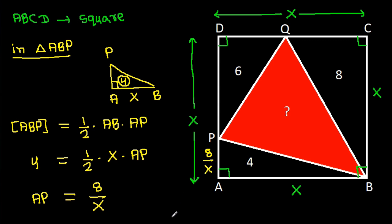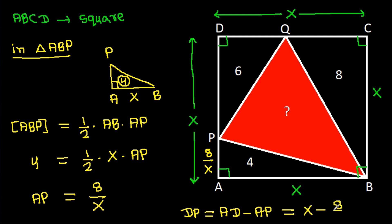And DP will be equal to AD minus AP, that will be X minus 8/X, so DP = X minus 8/X.